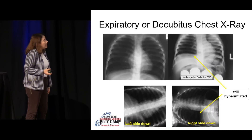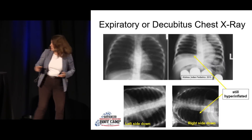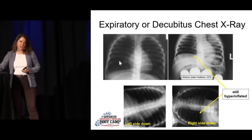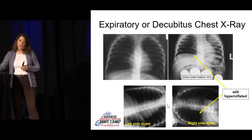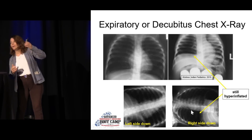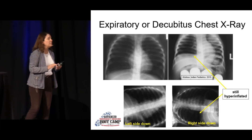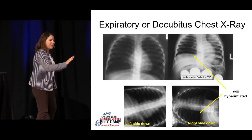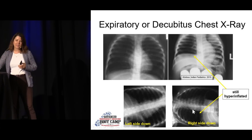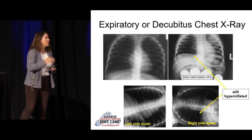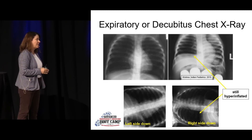One of the things we typically do is either an expiratory film or a decubitus film. With an expiratory film, the technologist actually goes in and shoves the baby's belly to make them do a forced expiration. Or we put the kid down in a decubitus position. The theory behind both is that because of air trapping, if you force the kid to expire, the side with the foreign body does not deflate. Or the dependent side is supposed to squish down, but it's staying hyperinflated — pointing to a problem on that side, maybe a foreign body.